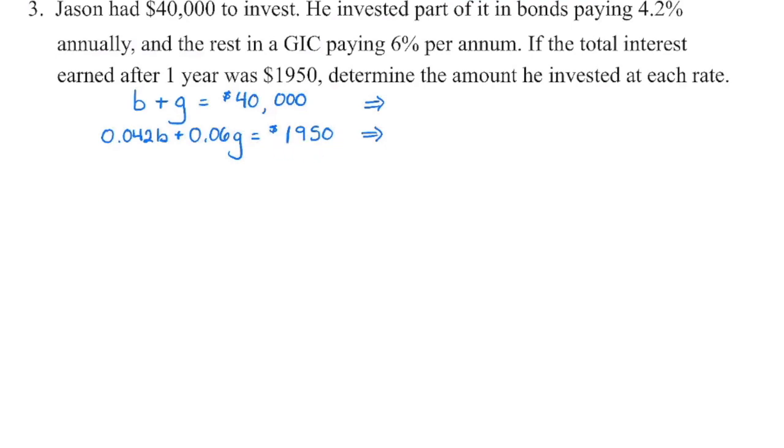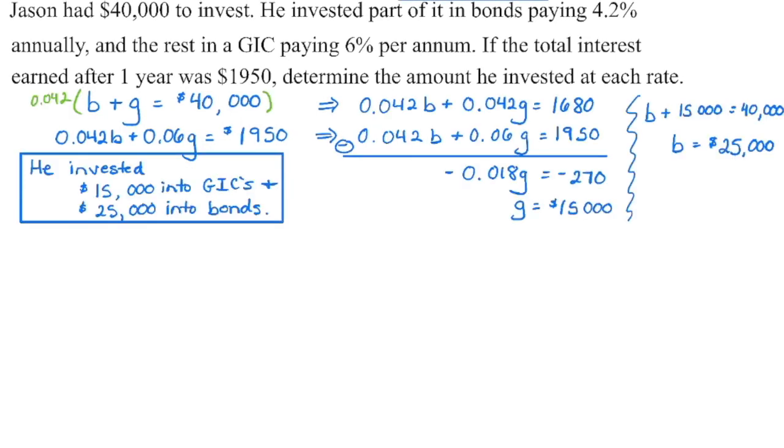Now I could solve this by substitution, isolating one of those variables. I'm going to do this one by elimination. There's more than one way you can go about even eliminating a variable. So make it really clear what we're doing. In this case, I subtracted the two systems to eliminate my B, and then I solve for G. So G is $15,000.